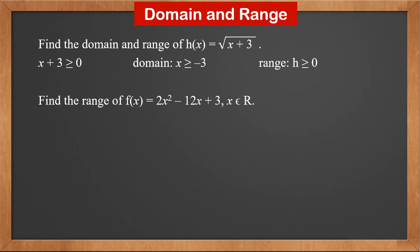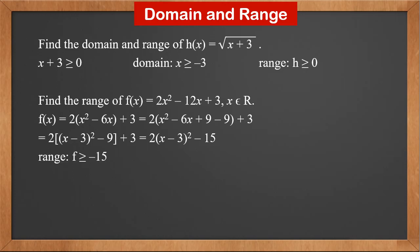Find the range of f(x) is 2x squared minus 12x plus 3, where x is any real number. This notation means x is a member of the set of real numbers. Let's complete the square for f(x). It is 2(x squared minus 6x) plus 3. We add and subtract 9 inside of the brackets. It becomes 2(x minus 3 squared minus 9) plus 3. This is 2(x minus 3) squared minus 15. Since the square is always greater than or equal to 0, the function values are always greater than or equal to minus 15. So the range is f greater than or equal to minus 15.